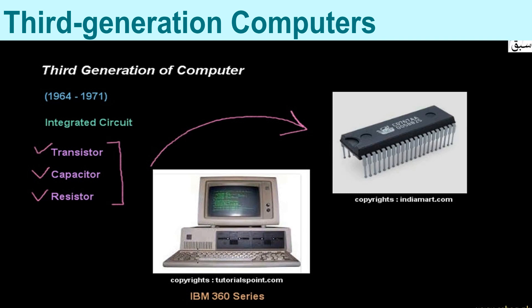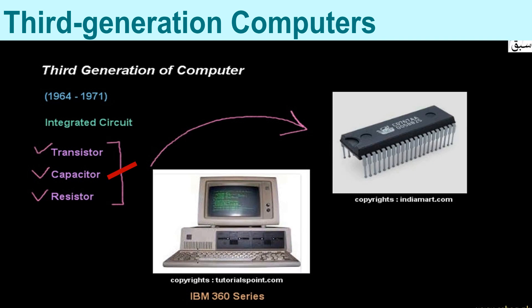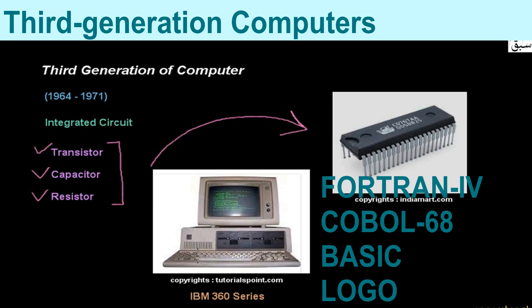Now let's discuss about the third generation computers. The main characteristics were as follows: they used integrated circuits, popularly known as chips. These computers were smaller in size compared to the second generation computers. Capacities of main memories were greatly enlarged. The computers used an operating system that allowed machines to run many different programs simultaneously. High level programming languages were developed, such as Fortran 4, COBOL 68, Basic, and Logo.